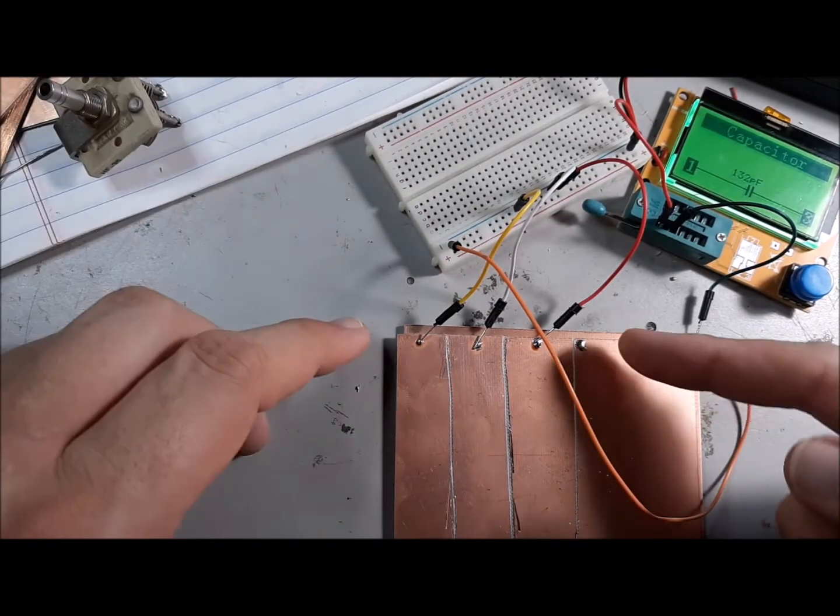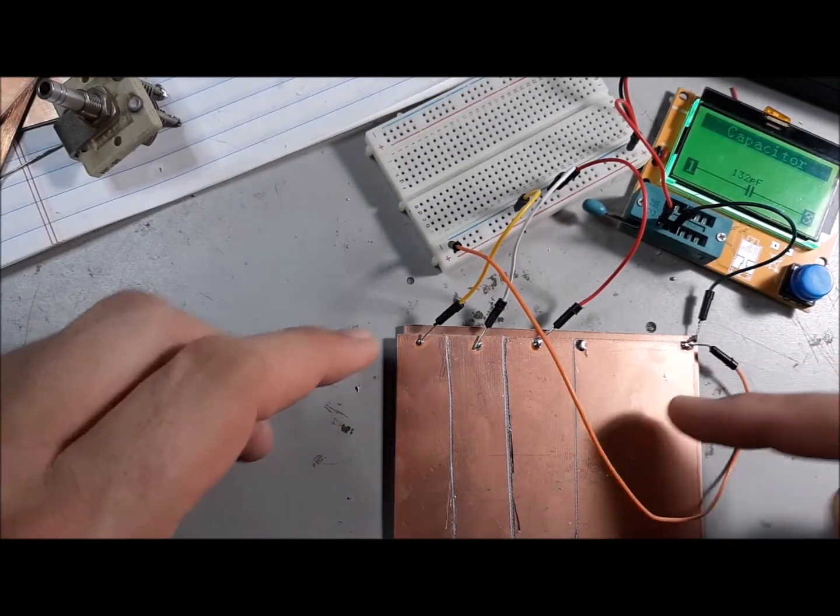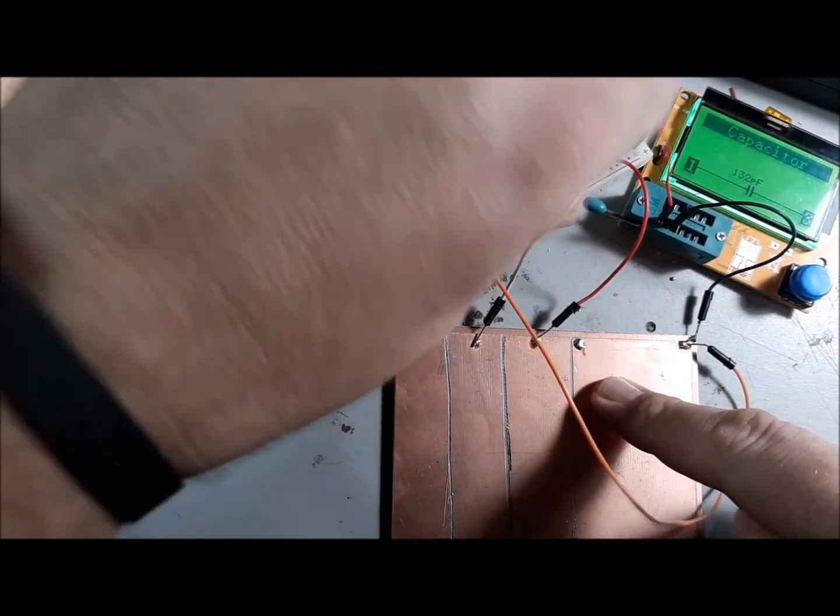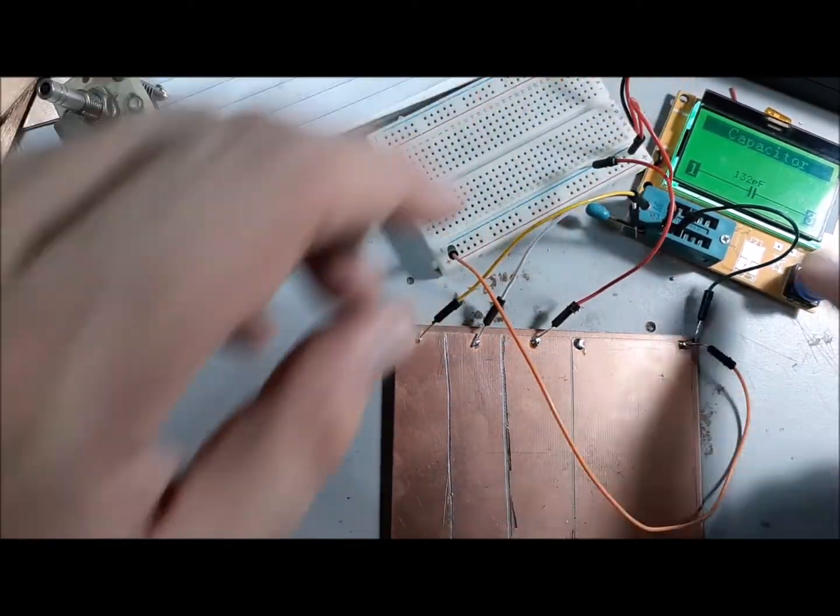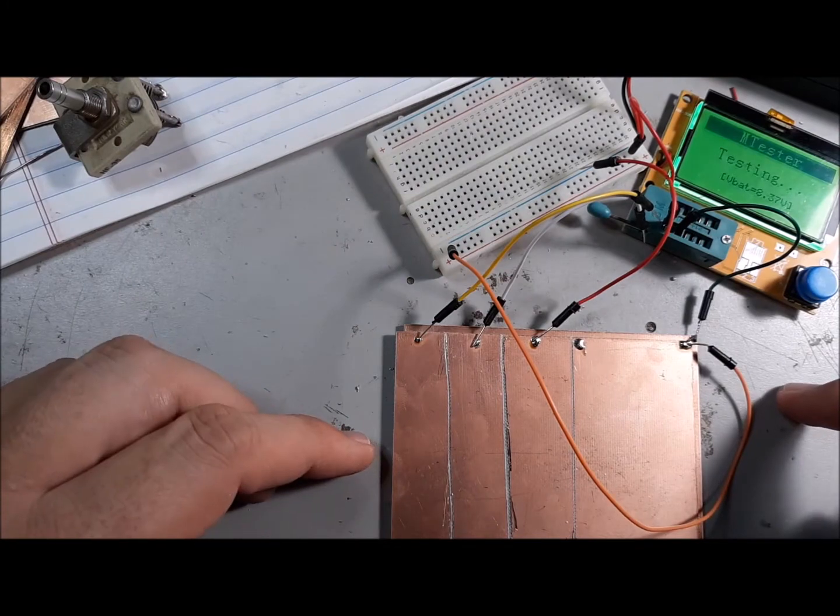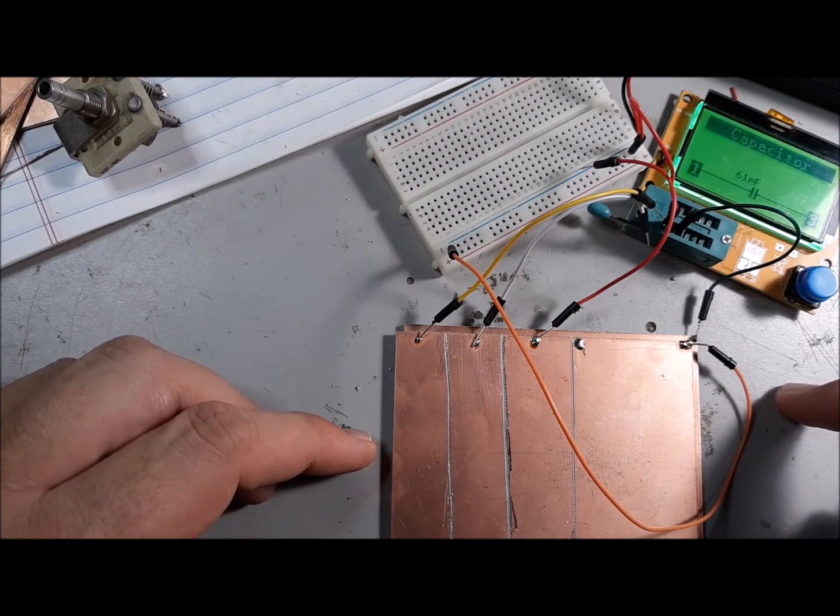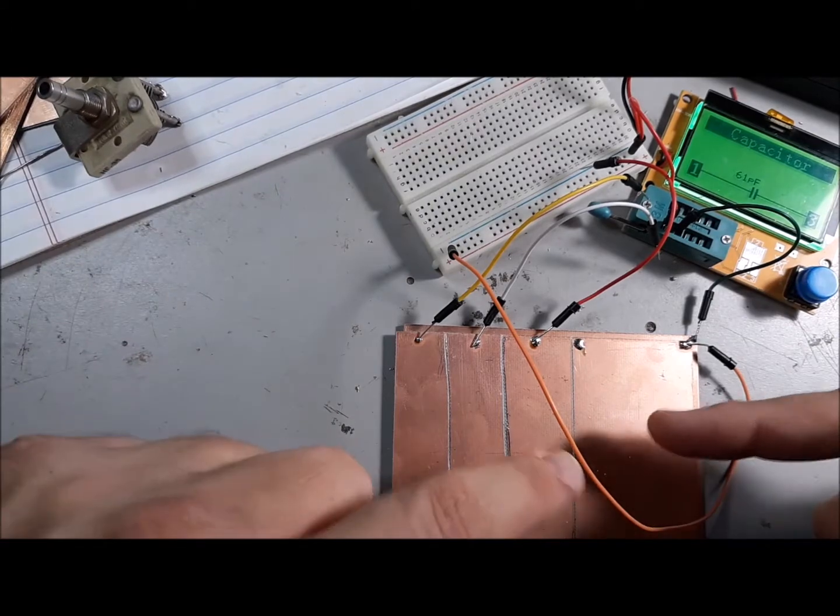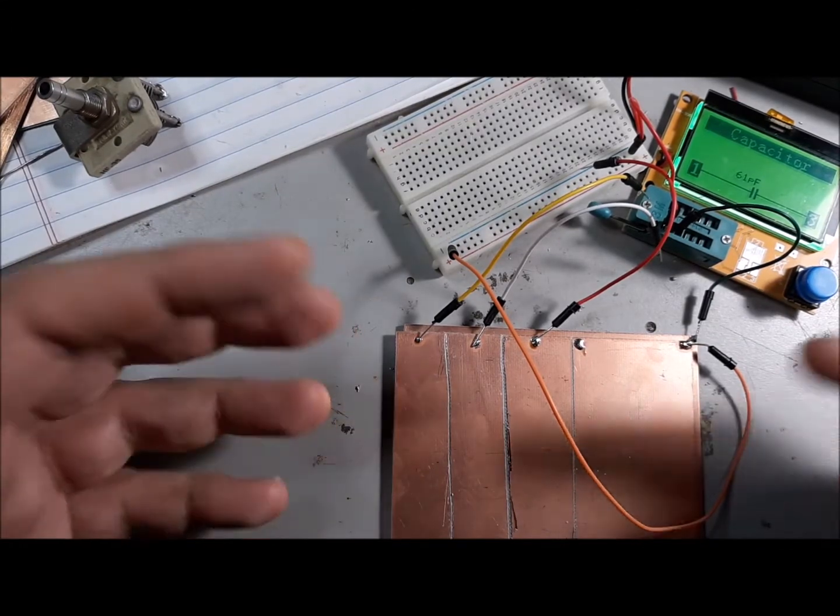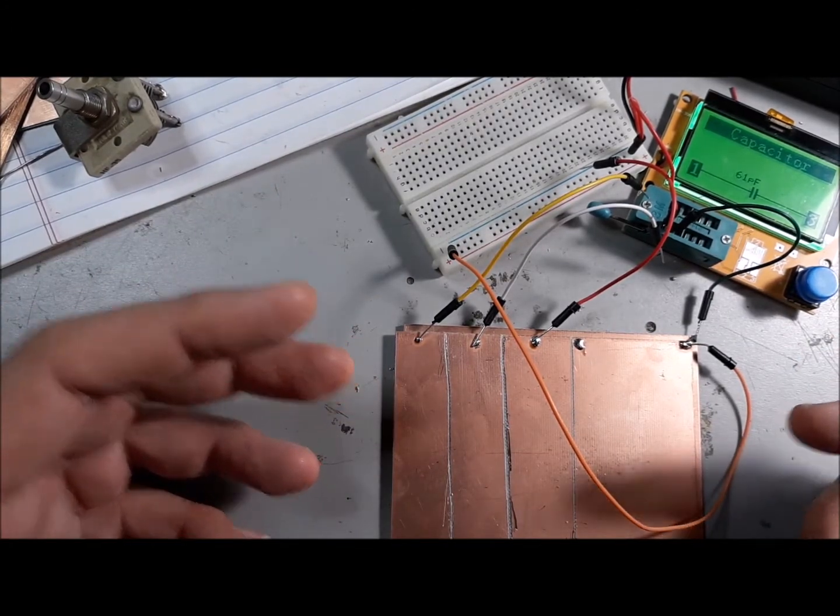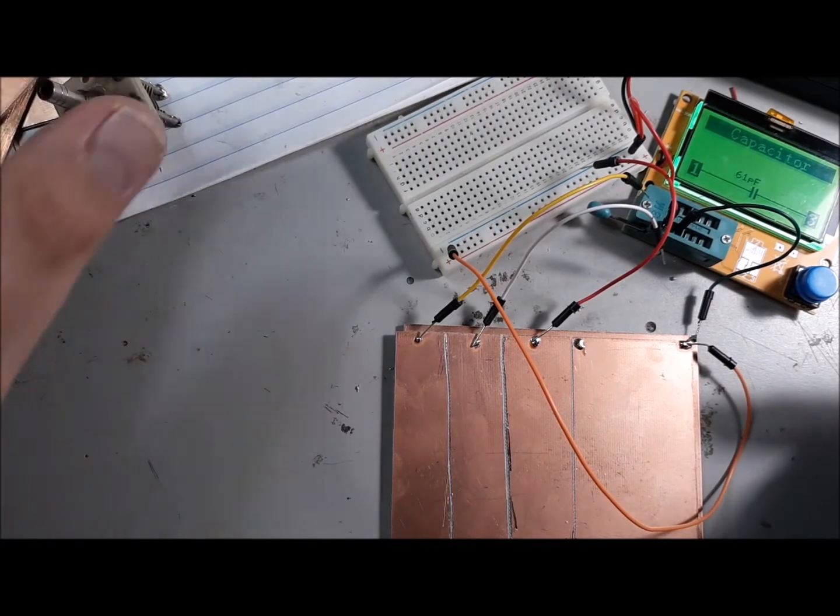So if I were to split this one more time, of course this one by itself is I think 50-something picofarads—I think it's 57 or 56, somewhere in there. No, 61, okay. So I've got 61, it's about 60 picofarads, and 40, 40, 40 roughly, and that gets me into the range with more capacitance.